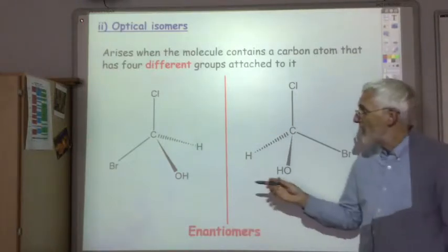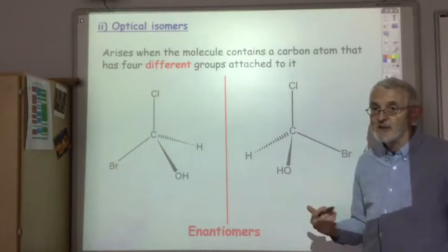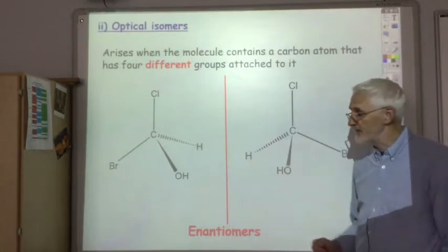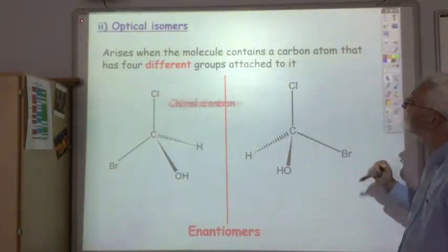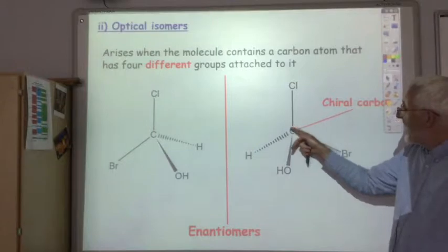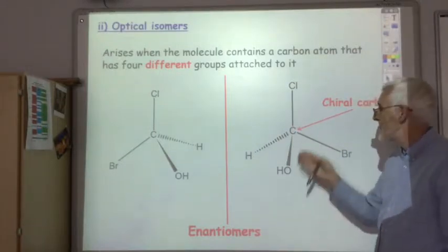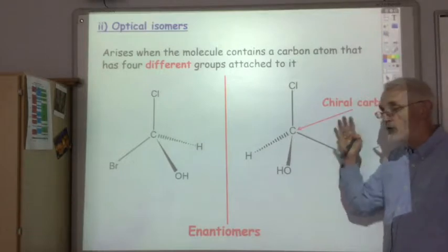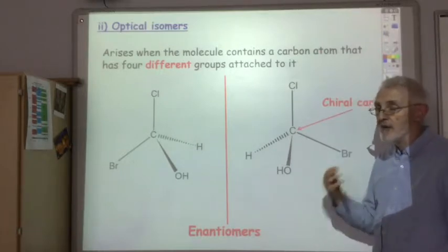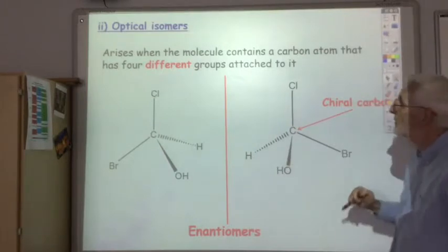Another name for optical isomers is enantiomers. Enantiomers is a pair of optical isomers. And this carbon atom is referred to as the chirocentre — this is the carbon atom which makes this molecule chiral, which makes these molecules optical isomers.